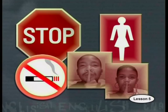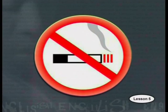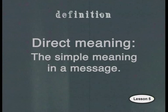Look at these examples — I'm sure you'll know what they mean. When there's only one meaning to a message, like in the signs we've just seen, we say that this is the direct meaning. In other words, the direct meaning is the simple meaning in a message. Take a look at these messages again and say what the direct meaning is in each case and where you are likely to find the message.